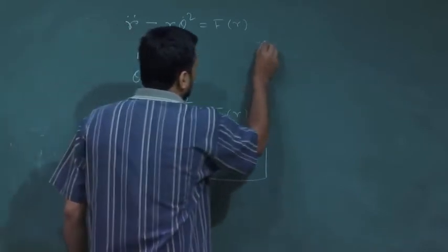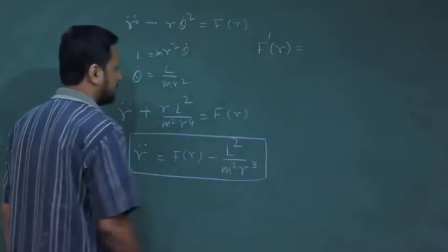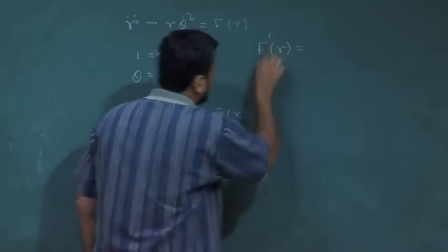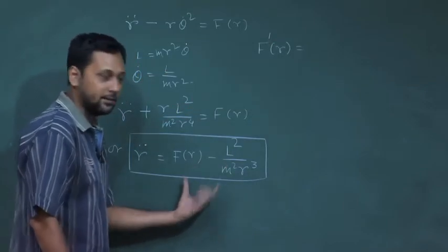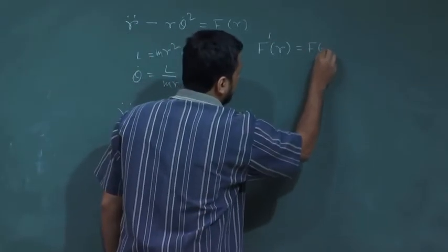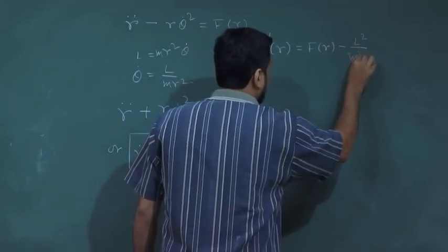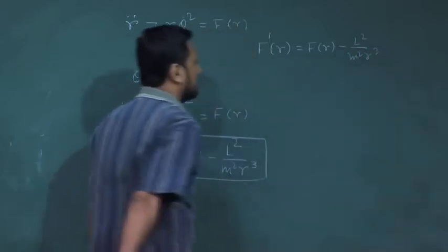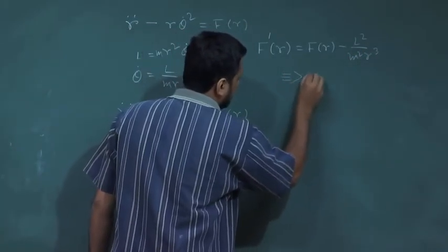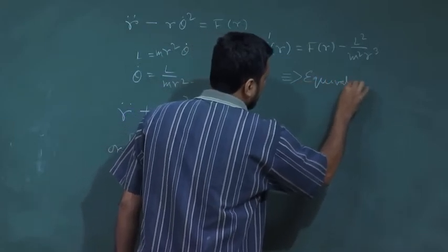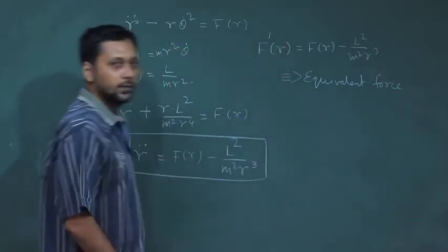So we can write an equivalent force term, which we denote by F'(r) — please note that this is not a derivative, it is just a representation of the entire right-hand side. We can write this as F(r) − L²/(M²r³). This is the equivalent force.